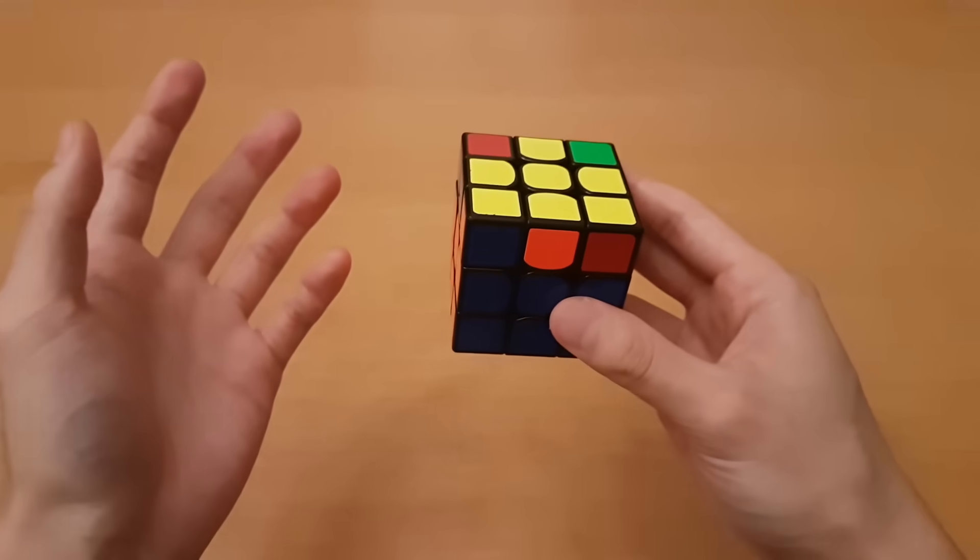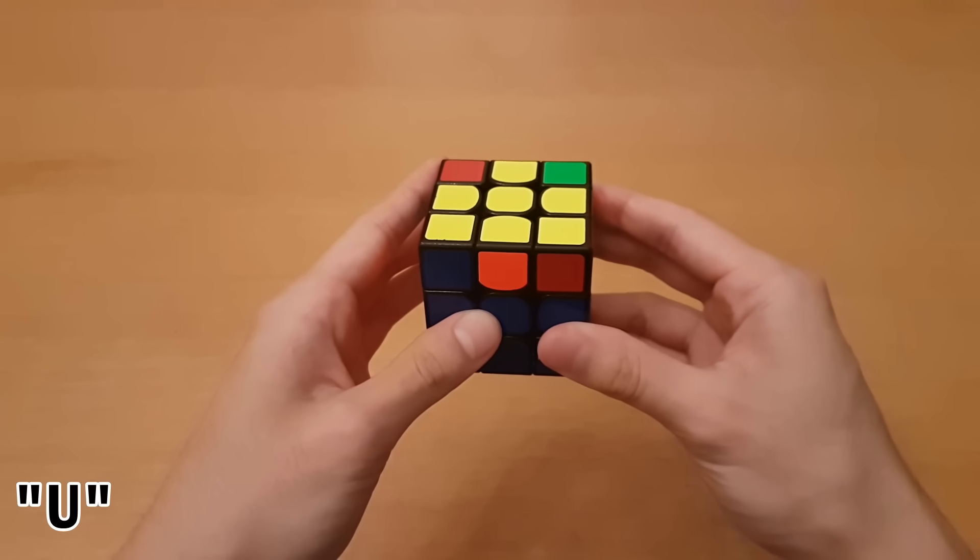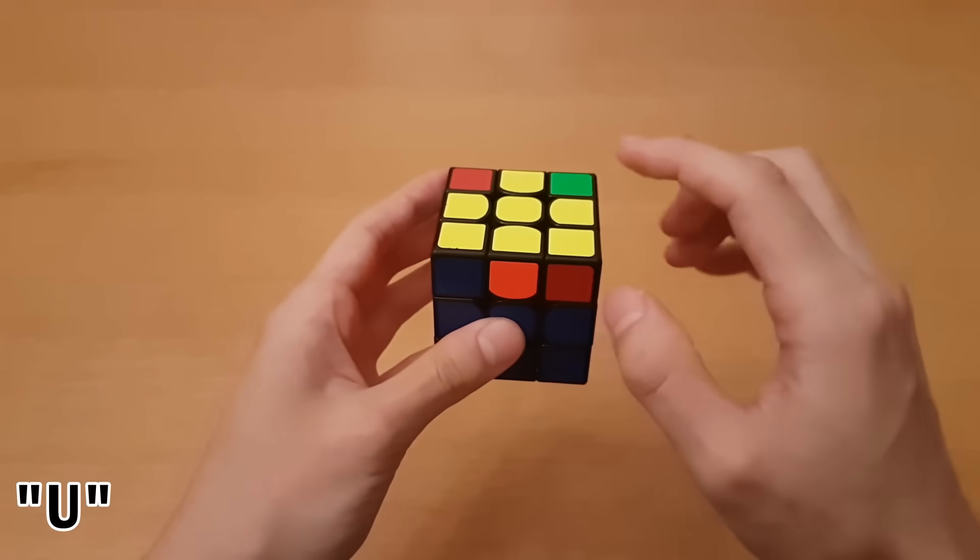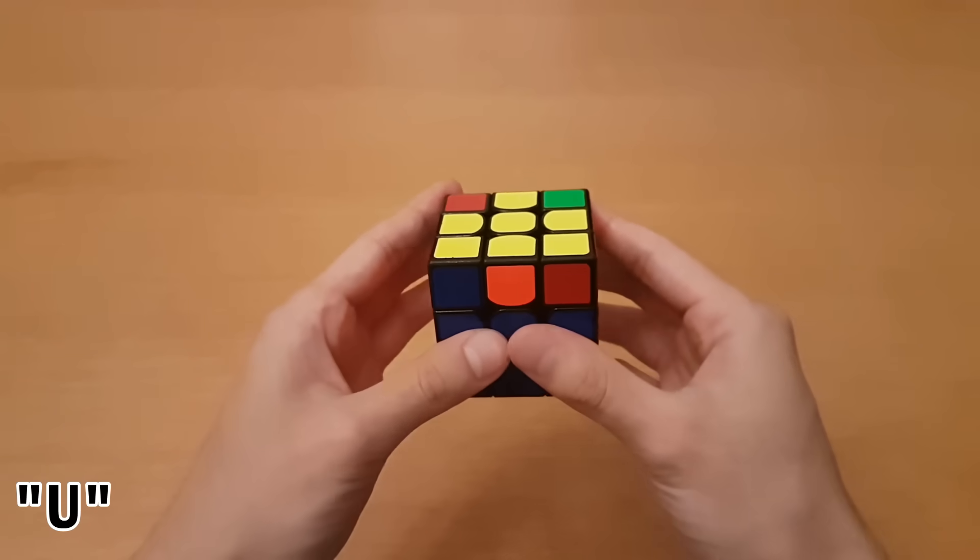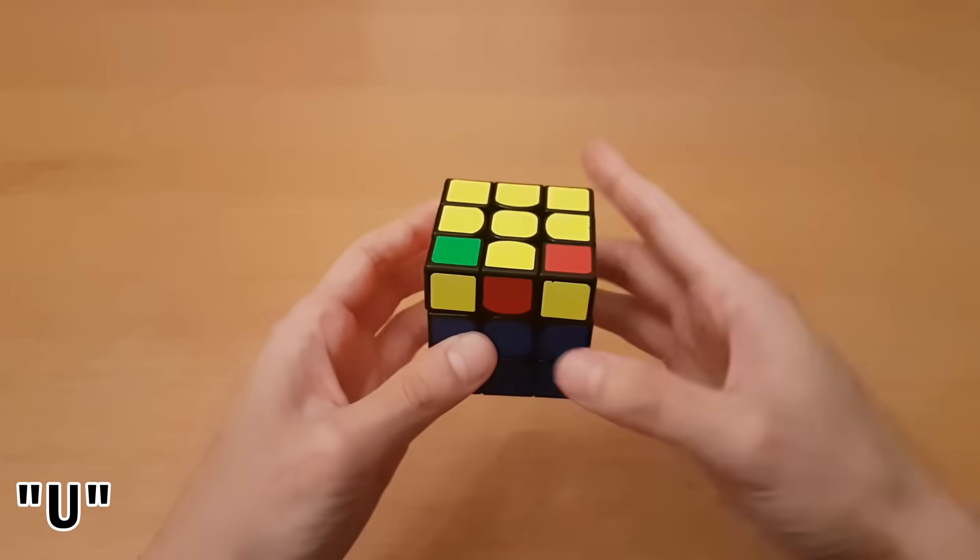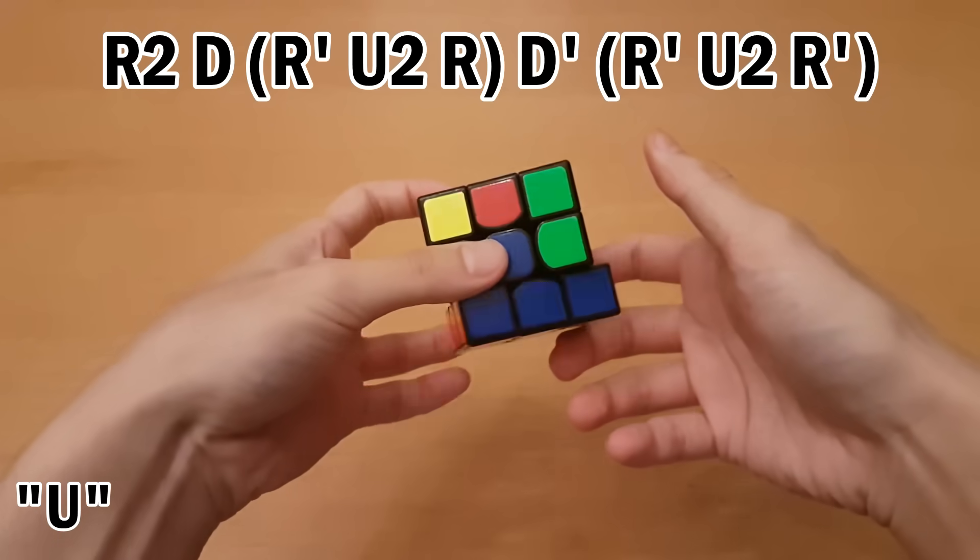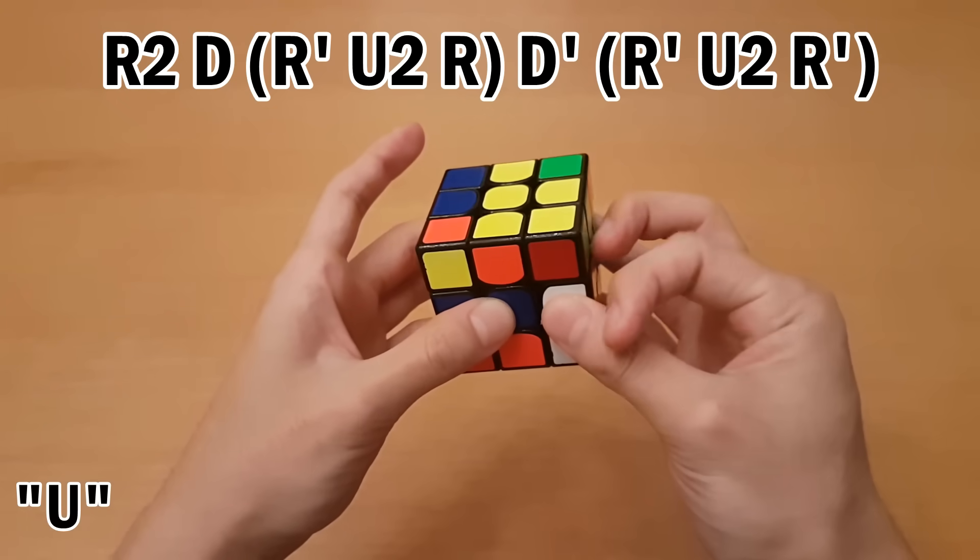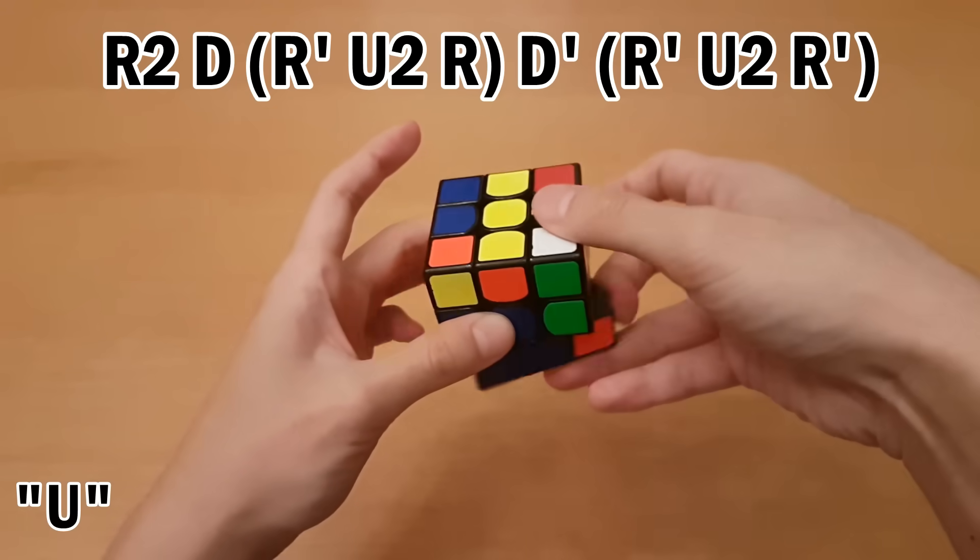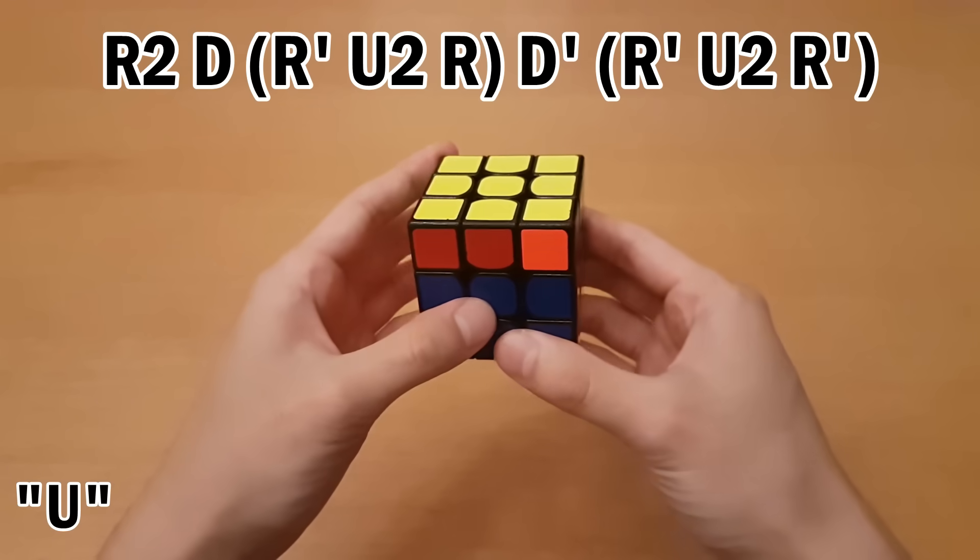Now for the last case, I've saved this one for last because it's a bit harder to memorize than the other ones. There's no exactly clear pattern. But you see that there's two solved here already, and then these two face the same direction. So then get these facing you. And then what you do is this: R2, D, like this, and then R', U2, R, D', R', U2, R'.